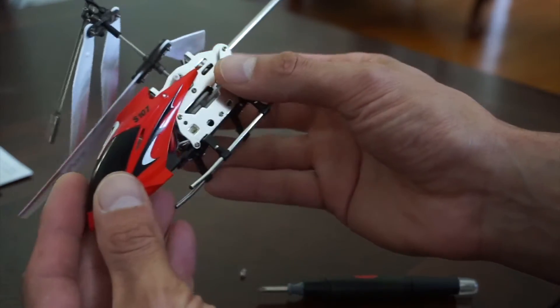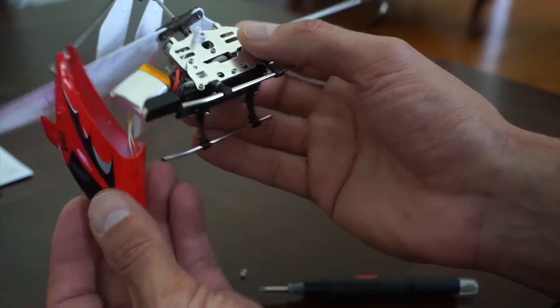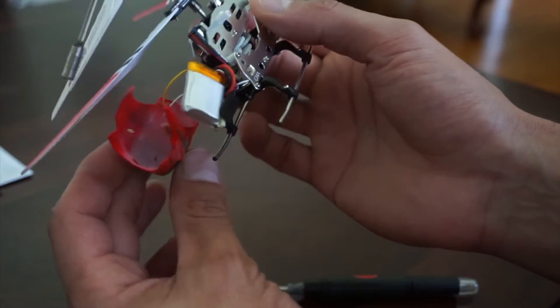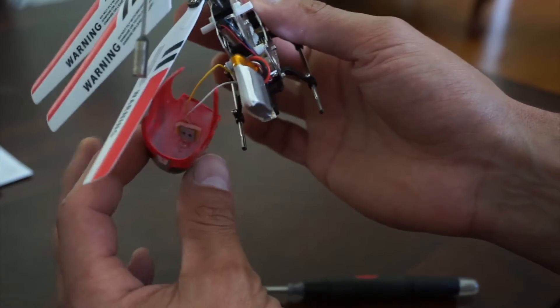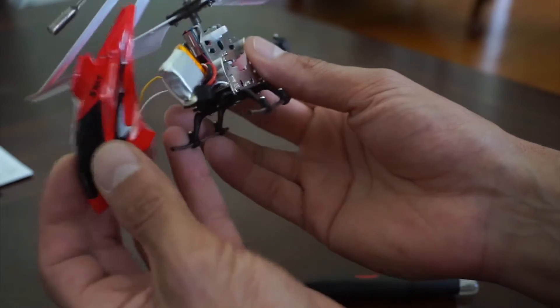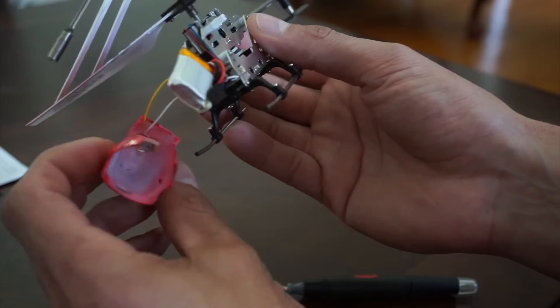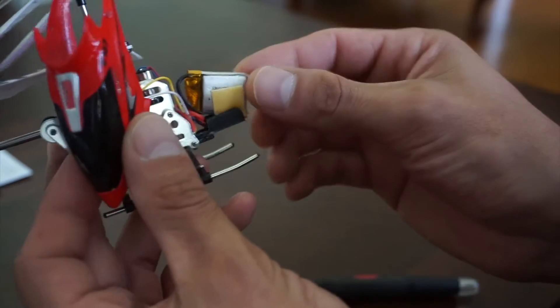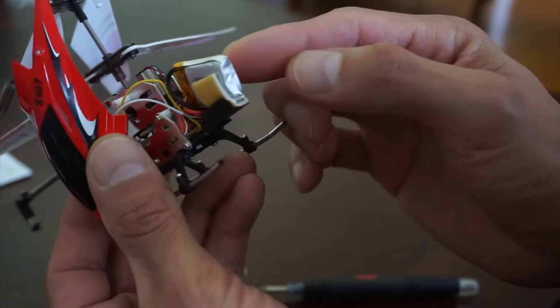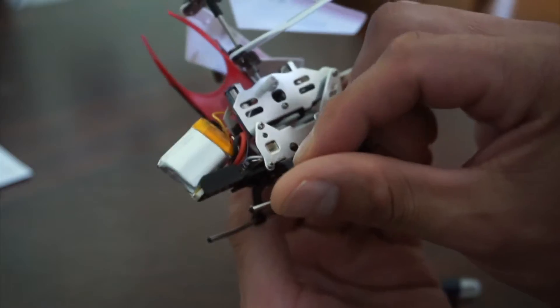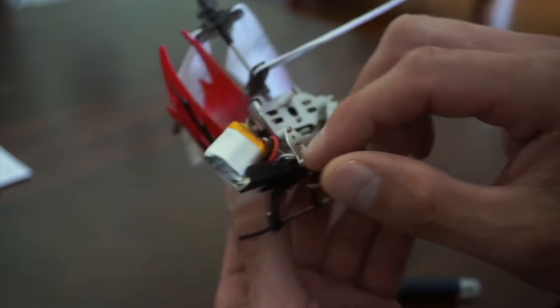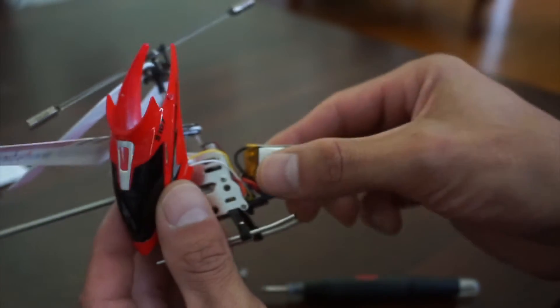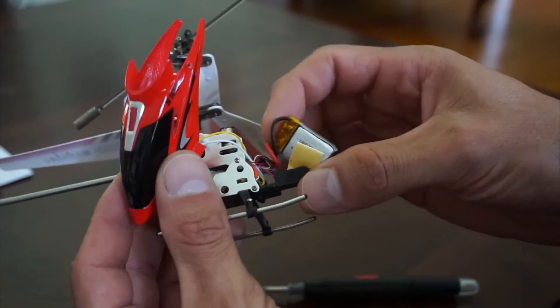The canopy just slides off nice and easy. Now there's two wires, be careful, that are connected to that little LED light on the front, so just be careful you don't pull on that too hard. But here is the existing battery inside your helicopter, and we're going to be replacing it.